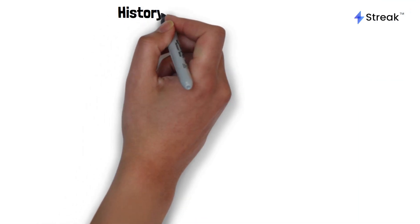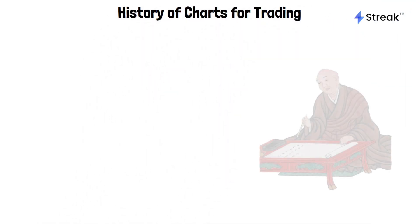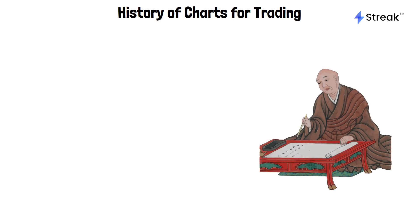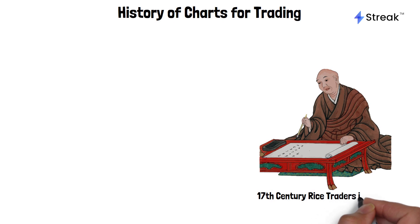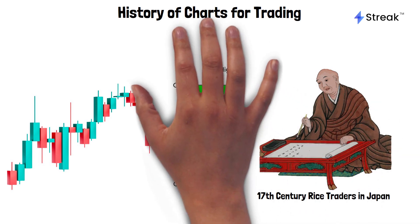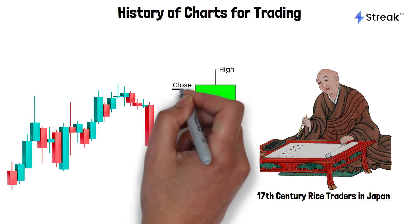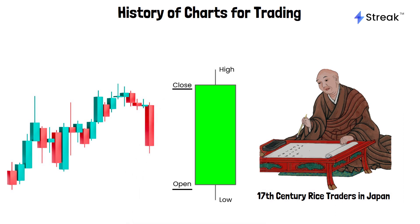Do you know how people started using charts for trading? The first known usage of charts for trading purposes dates back to the 17th century, where Japanese rice traders employed candlestick charts to analyze market conditions. Using a number of lines and rectangles to illustrate the data, these charts represented the opening and closing prices of rice contracts, as well as the high and low values for the day.